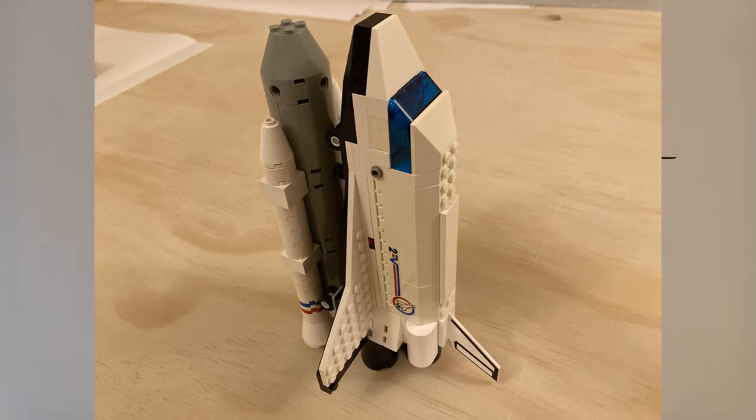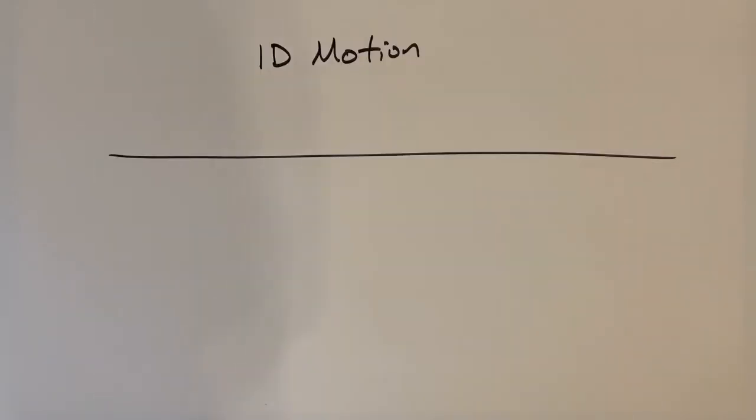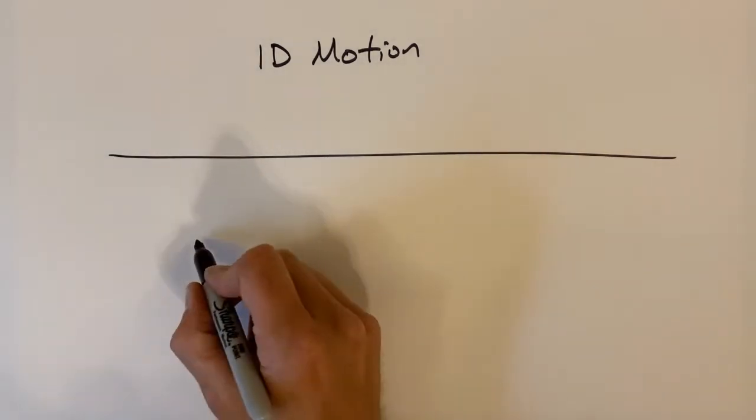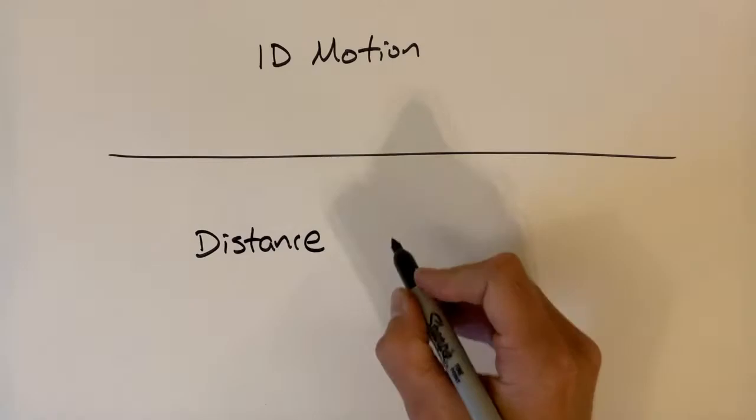So in order to understand one-dimensional motion, we first need to get some vocabulary out of the way. So the first thing we're going to discuss is the difference between distance and displacement.